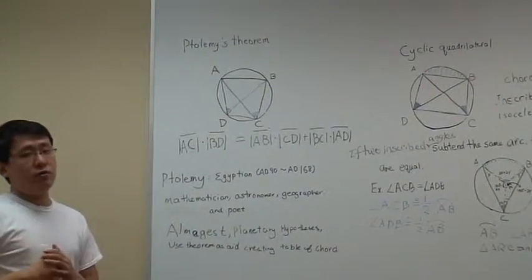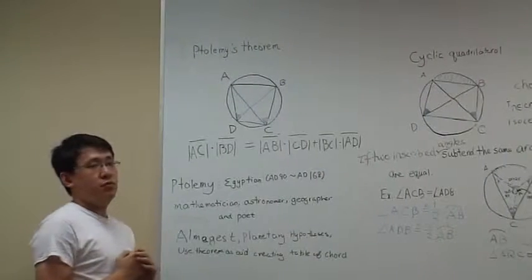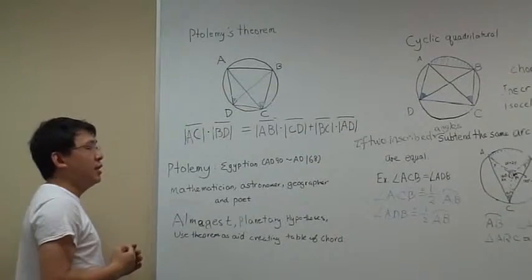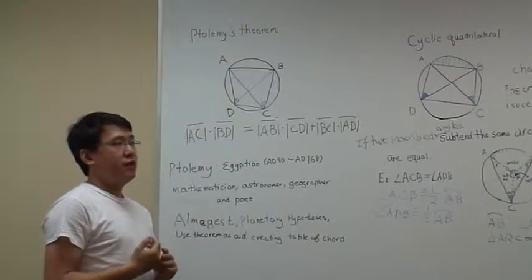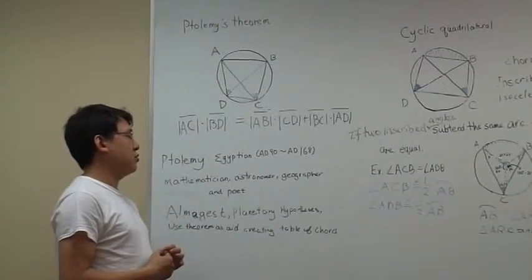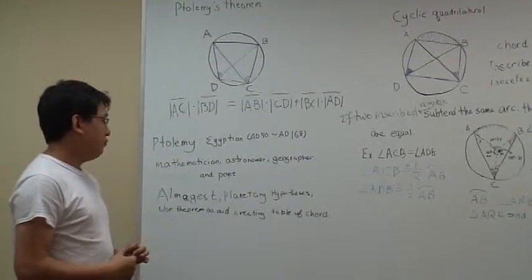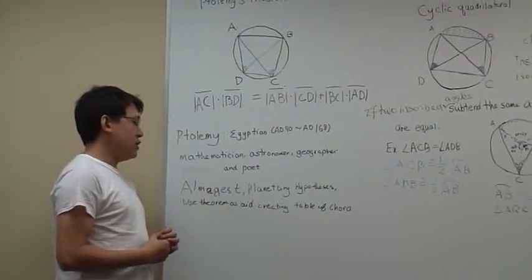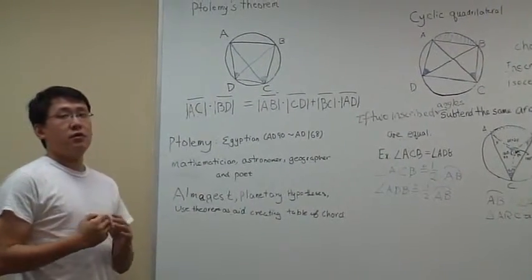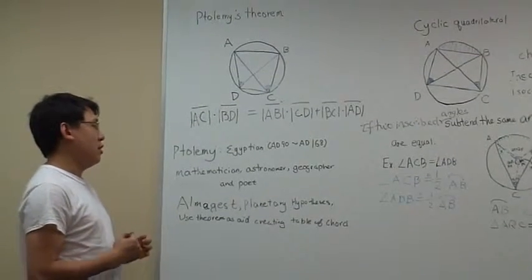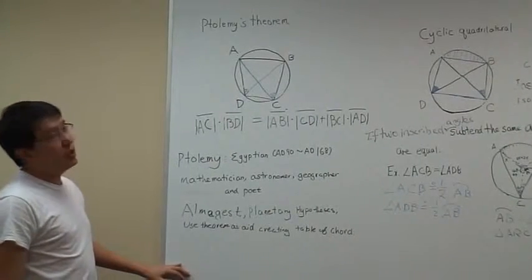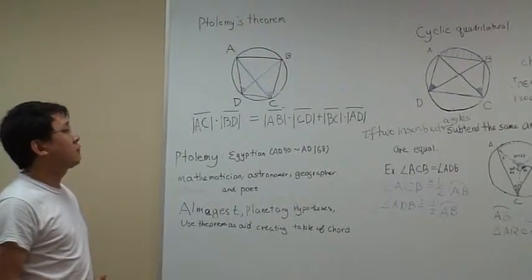Before we go into the proof, I want to introduce Ptolemy first. Ptolemy was born in Egypt, Roman Empire, in 100 AD. He was living most of his life in Alexandria, and he was considered one of the top mathematicians and astronomers of that time. Two of his most famous works are the Almagest and the Planetary Hypothesis. Both works have had big influence on our astronomy study today. He used a lot of mathematical theorems to help him create those books.